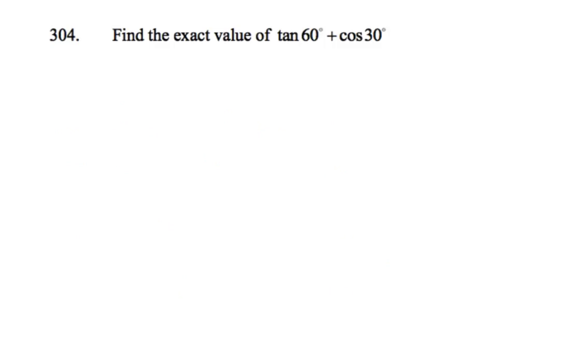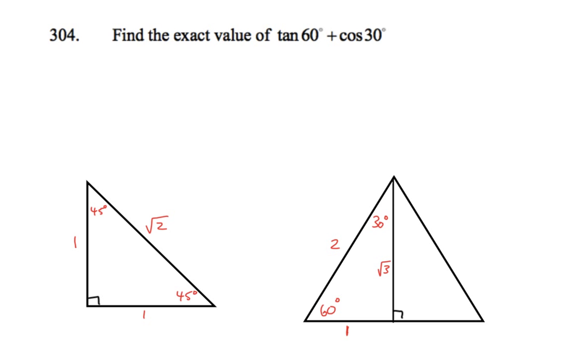Find the exact value of tan 60 plus cos 30. So we're using a couple of different exact values here and doing that one at a time. From our triangles, tan 60, from 60 here, tan is opposite over adjacent. So I think we're going root 3 over 1.